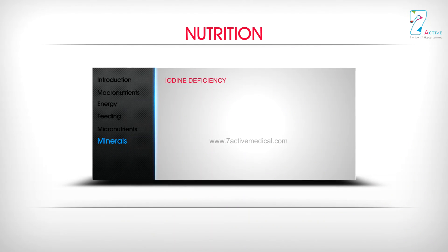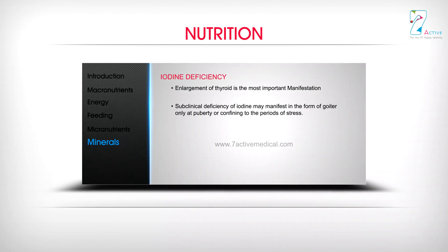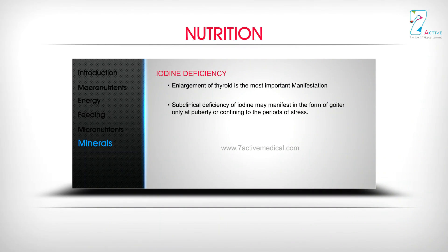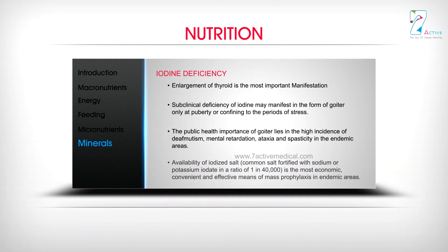Enlargement of the thyroid is the most important manifestation of iodine deficiency. Subclinical deficiency may manifest as goiter only at puberty or during periods of stress. The public health importance of goiter lies in the high incidence of deaf mutism, mental retardation, ataxia, and spasticity in endemic areas. The most economic, convenient, and effective means of mass prophylaxis is iodized salt — common salt fortified with sodium or potassium iodate in a ratio of 1 in 40,000.